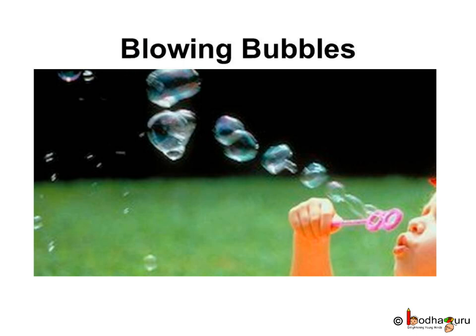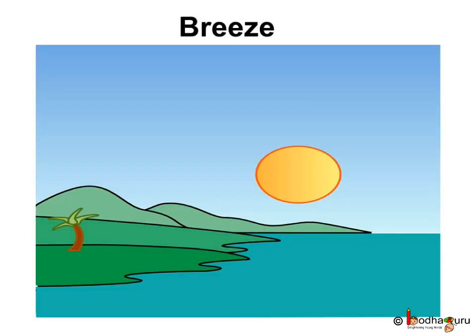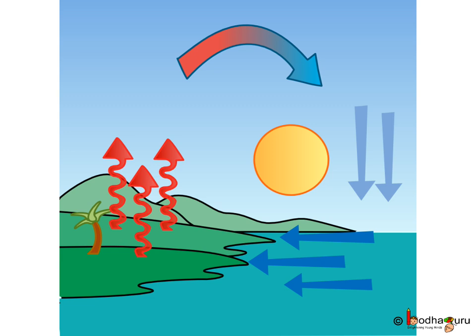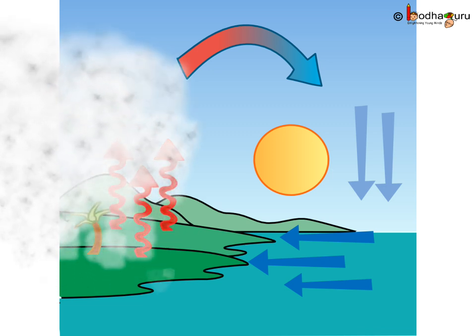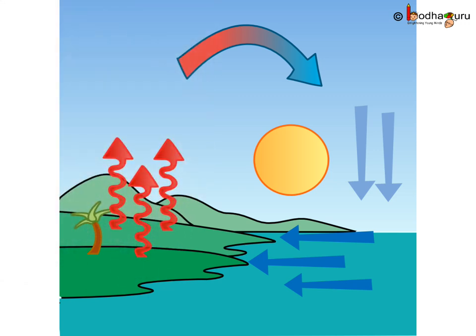Now let us see the different air movement near the sea areas during day and night. During daytime, the sun heats both the land and the sea. But the land gets heated faster than the water, so the air above the land rises up. The cool air above the sea rushes in to take its place. This is called the sea breeze — because the movement of air is from the sea towards the land.